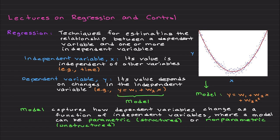As this being said, for representations like this, we call model. Model basically captures how dependent variables change as a function of independent variables.